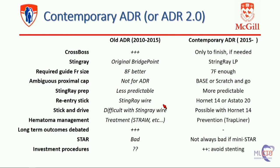The re-entry stick — Stingray wire, Hornet 14 or Stout 20 — is certainly what we prefer now. The stick-and-drive was difficult with the Stingray wire; now it's possible with the Hornet 14. Hematoma management was treatment-focused then; now we're doing a lot more prevention with the trap liner. Long-term outcome debate has been resolved — we know that long-term outcomes are the same with antegrade dissection re-entry or other techniques. STAR was considered bad; now it's not always bad if it's mini-STAR or an investment procedure. The technique has evolved.